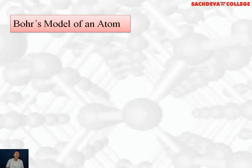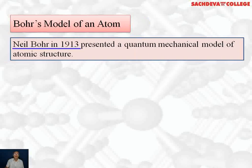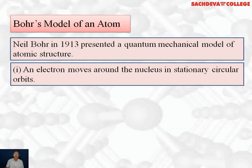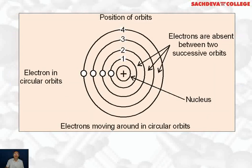The topic we are going to take is Bohr's model of atom. Niels Bohr in 1913 presented a quantum mechanical model of atomic structure. The first point was an electron moves around the nucleus in stationary circular orbits. These are the stationary circular orbits shown: first, second, third, fourth, and nucleus is in the center.